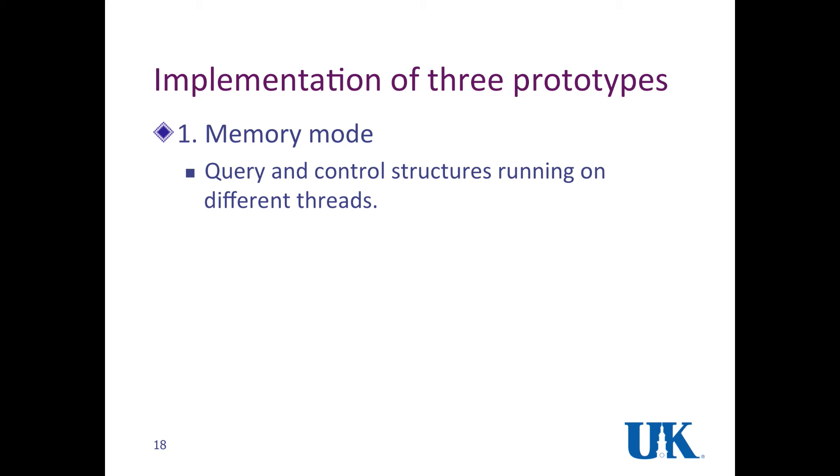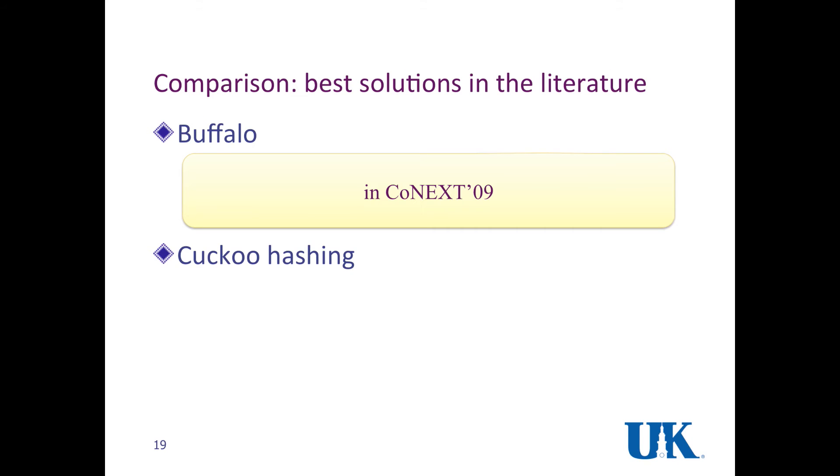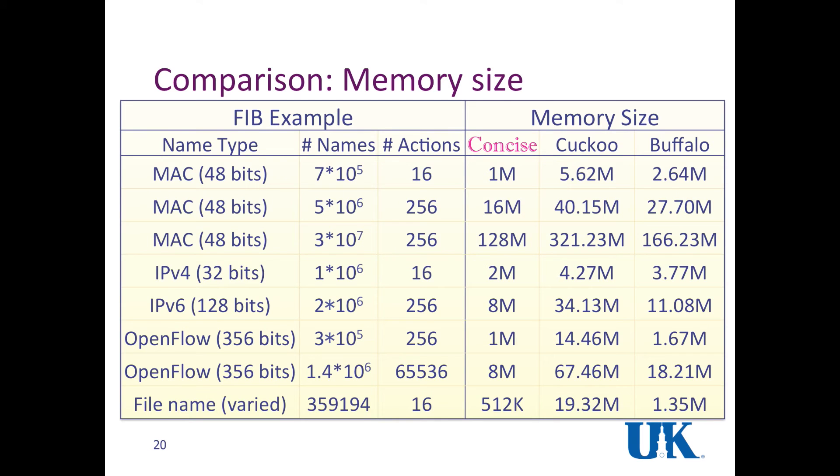We performed implementation using first memory mode, which is just running on main memory. Then we use Qlik, and we use DPDK. We have three implementations. We compare concise with existing solutions. The first is Bloom filter-based solutions, which is Buffalo, published several years ago, and Cuckoo Hash, published very recently by CMU guys. This is a comparison of memory size. Concise memory, we have different types of names: MAC address, IPv4, IPv6, OpenFlow file names. The results of concise is here. We find concise is very small compared to Cuckoo Hash and Buffalo.